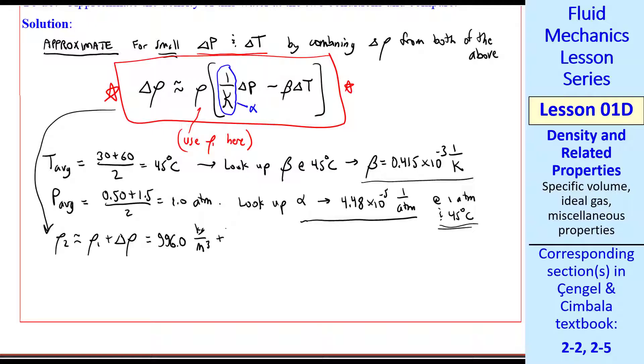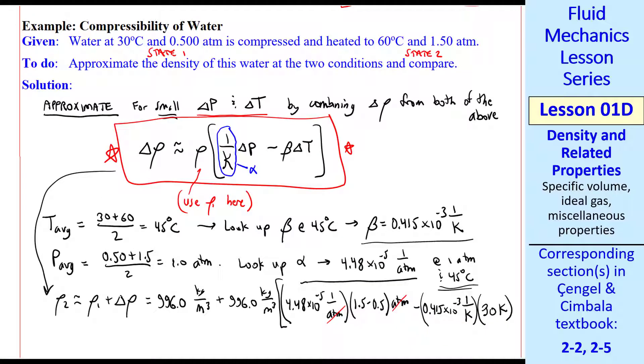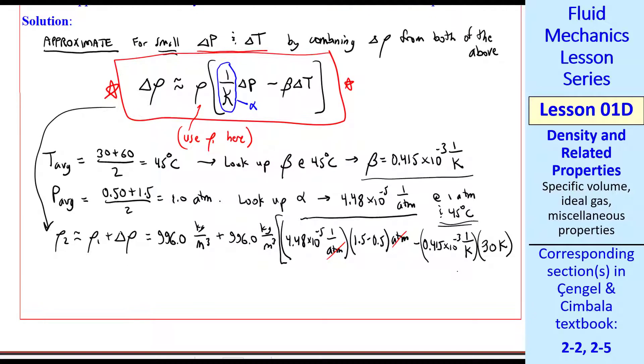Plus that same rho 1 times alpha delta P, 1.5 minus 0.5 atmospheres, minus beta times delta T, which is 30K. Remember that a change of 60 to 30 degrees C is 30 degrees C, which is the same as 30K.